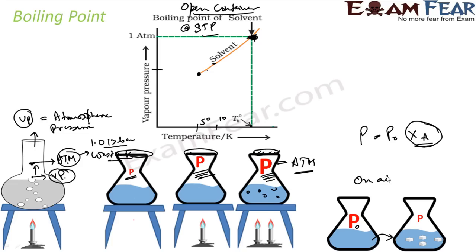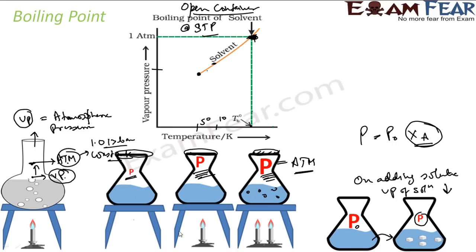On adding a solute, the vapor pressure of the solution decreases. If you combine these three concepts, you can visualize that the moment you add a solute to a solution, the pressure decreases — and that means you need more heat to boil it.